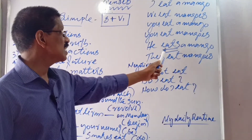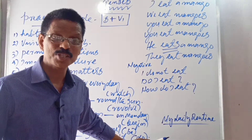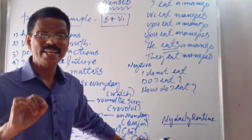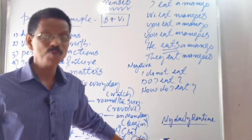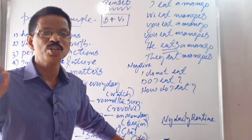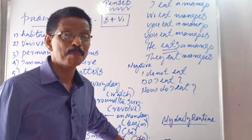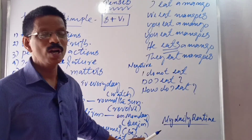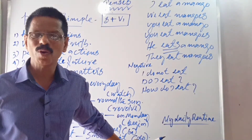He eats a mango. Do you remember that? If the subject is third person singular, the verb takes S or ES at the end to make it singular. Because if the subject is singular, the verb must be singular, and if the subject is plural, the verb also must be plural. So, he eats a mango — only with third person singular we use S or ES.